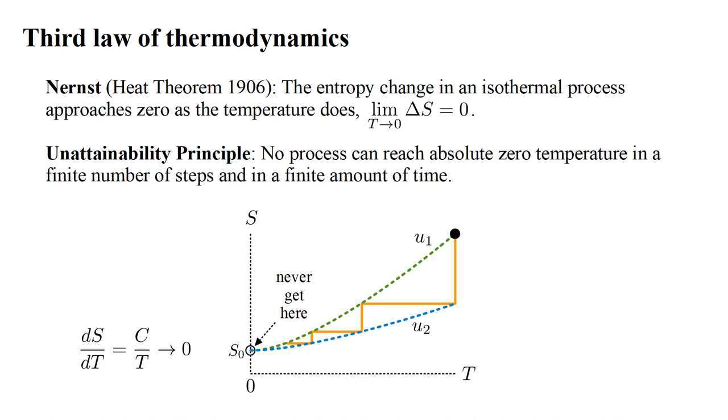This type of reasoning led Nernst in 1912 to formulate the unattainability principle. No process can reach absolute zero temperature, in a finite number of steps, and in a finite amount of time.